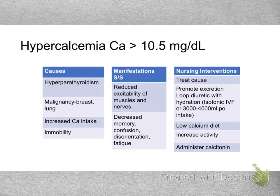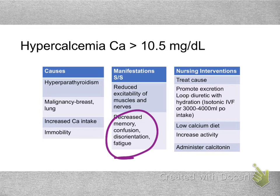Hypercalcemia can impact the excitability of muscles and nerves, so you can see some dysrhythmias, as well as neurological changes. Calcium typically doesn't change as rapidly as potassium, so you wouldn't see the same rhythm changes. To treat it, if not very severe, a low calcium diet may help. If we really need to get calcium down, we give IV fluids followed by a diuretic to promote excretion of calcium through the urine.